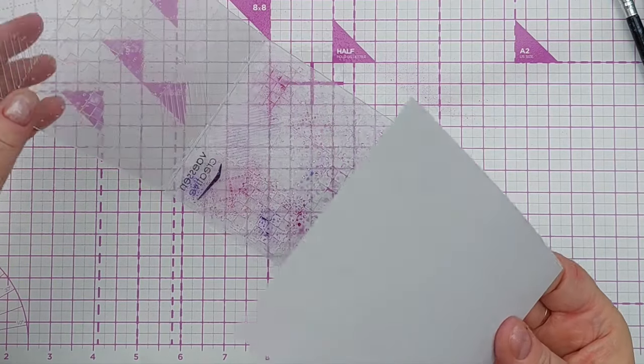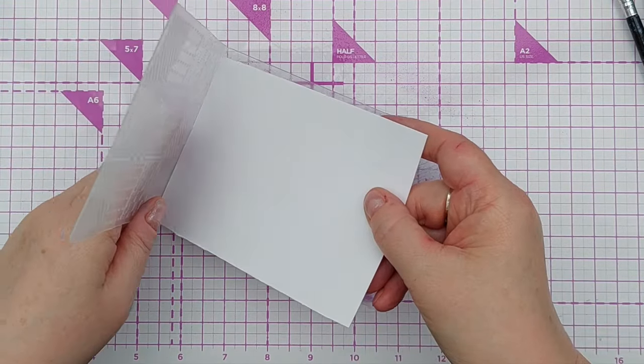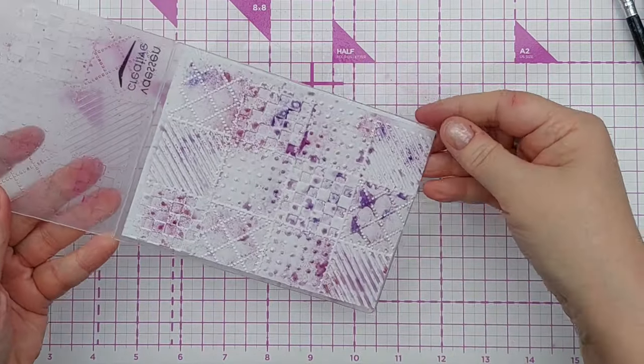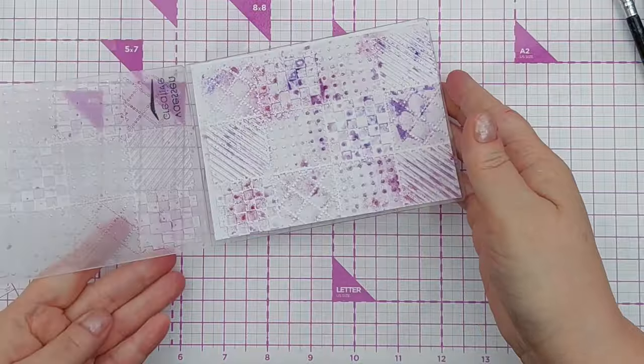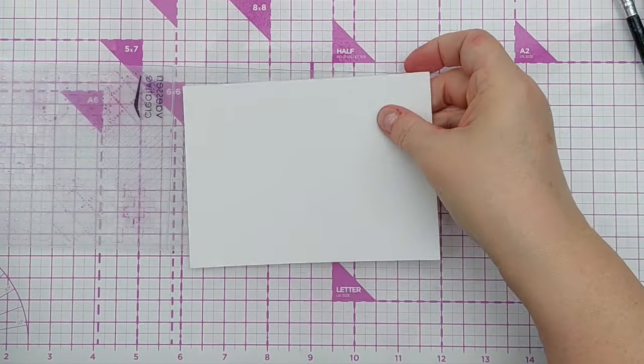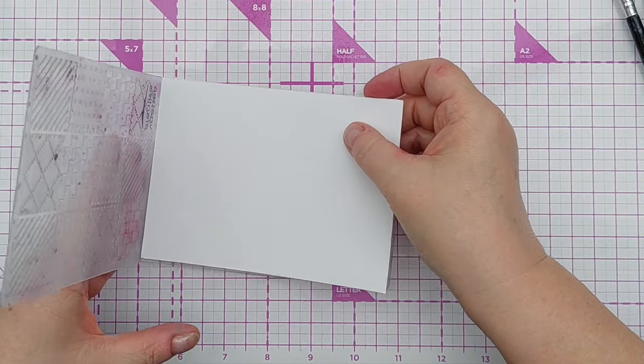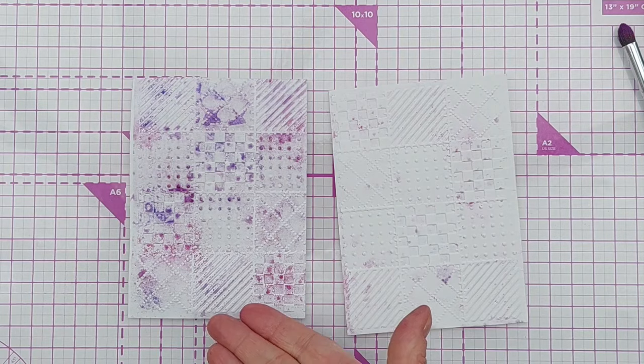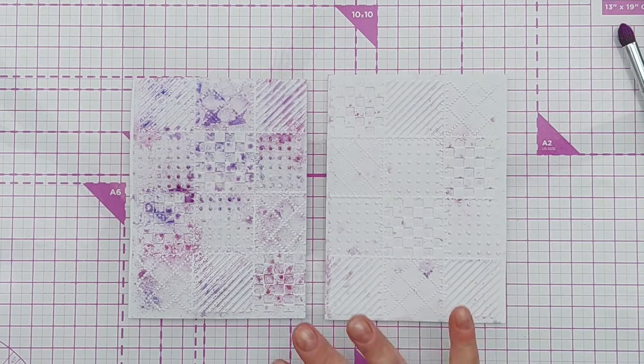Then you can pop your card in and run that through a die cutting machine. There we have another lovely smooshy distressed background. And again you could run that through for a more subtle effect. So that was the first one where it picked up most of the color and mica, and that's the second one with a really gentle subtle purpley magenta coloring.